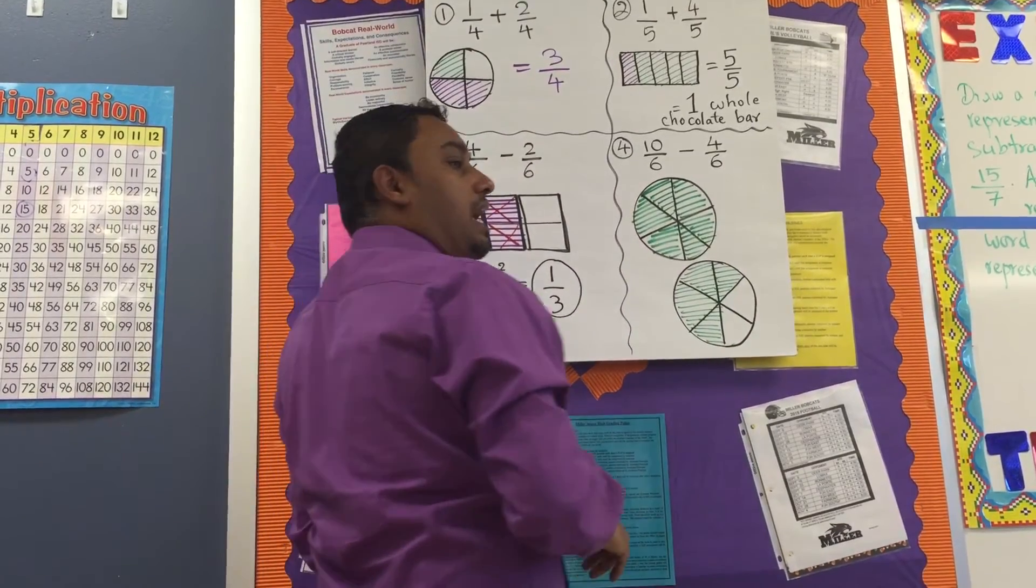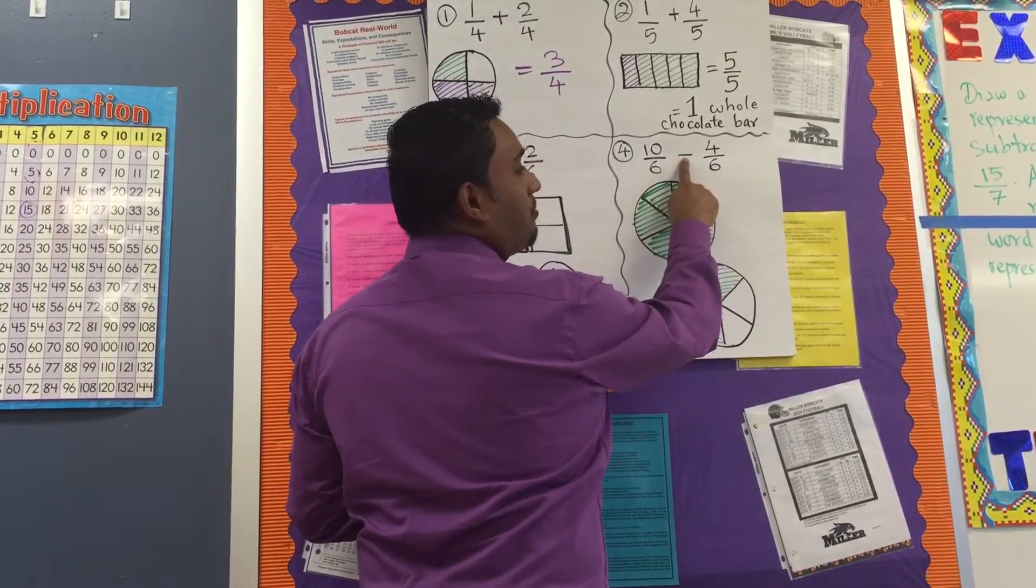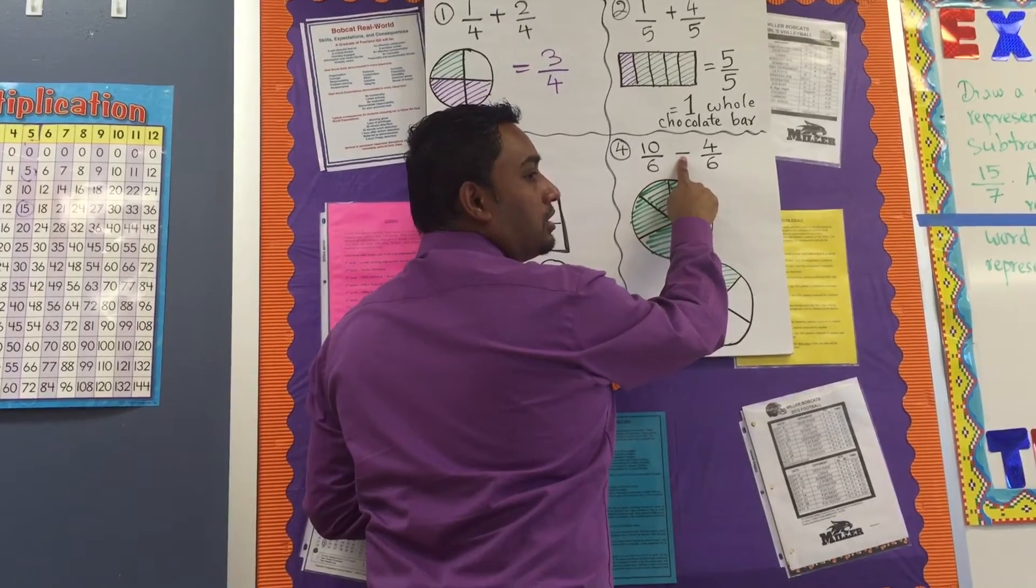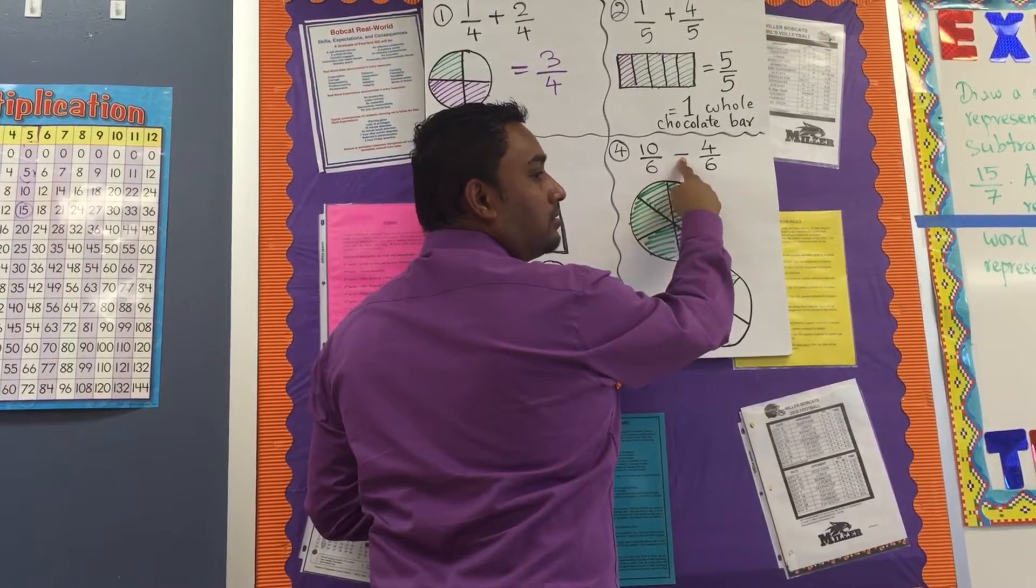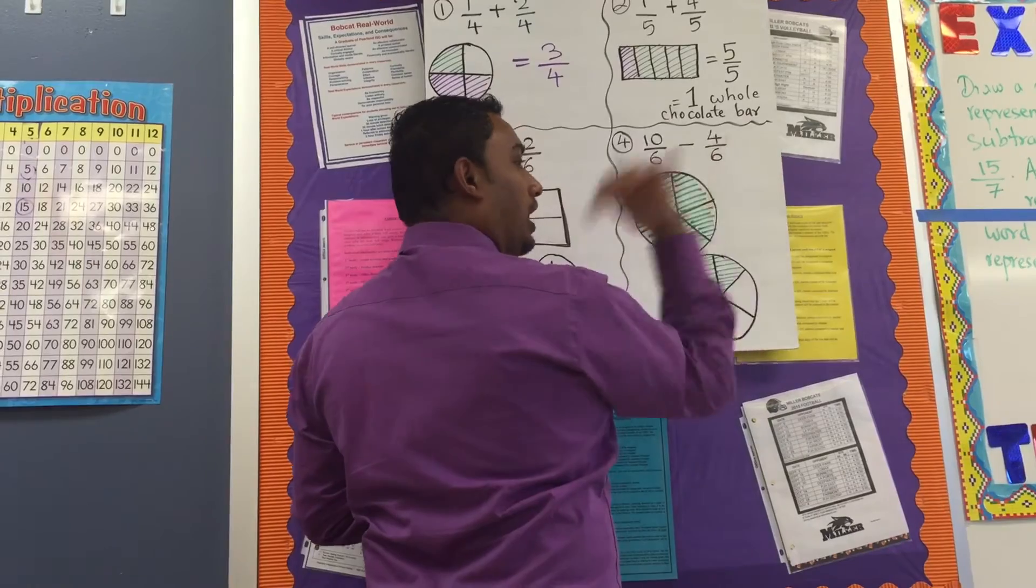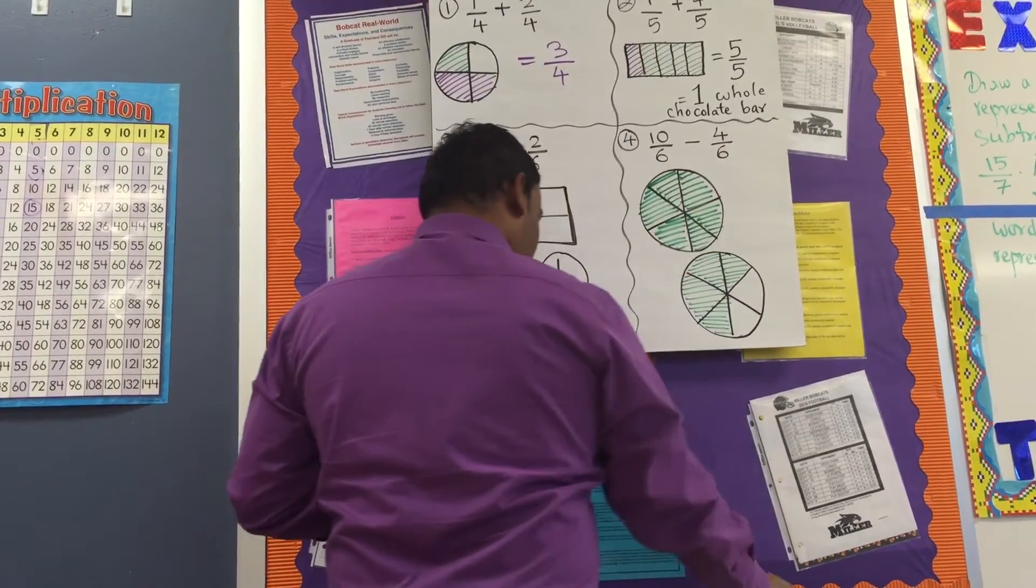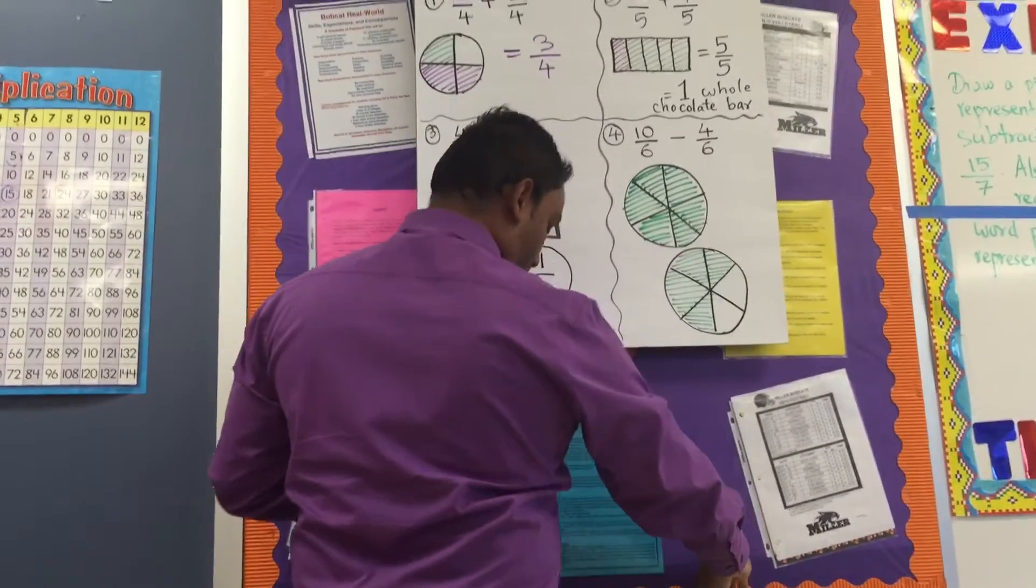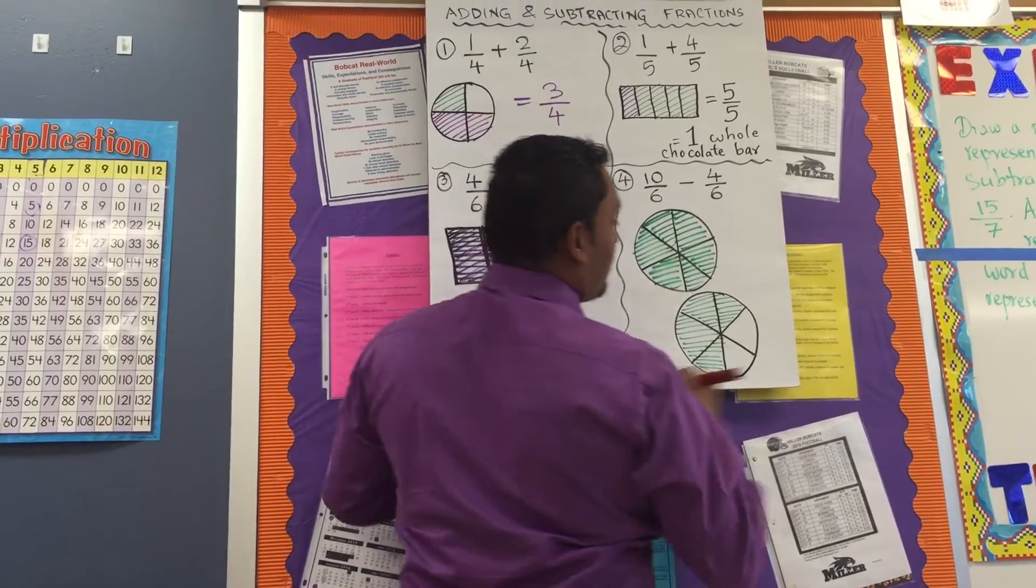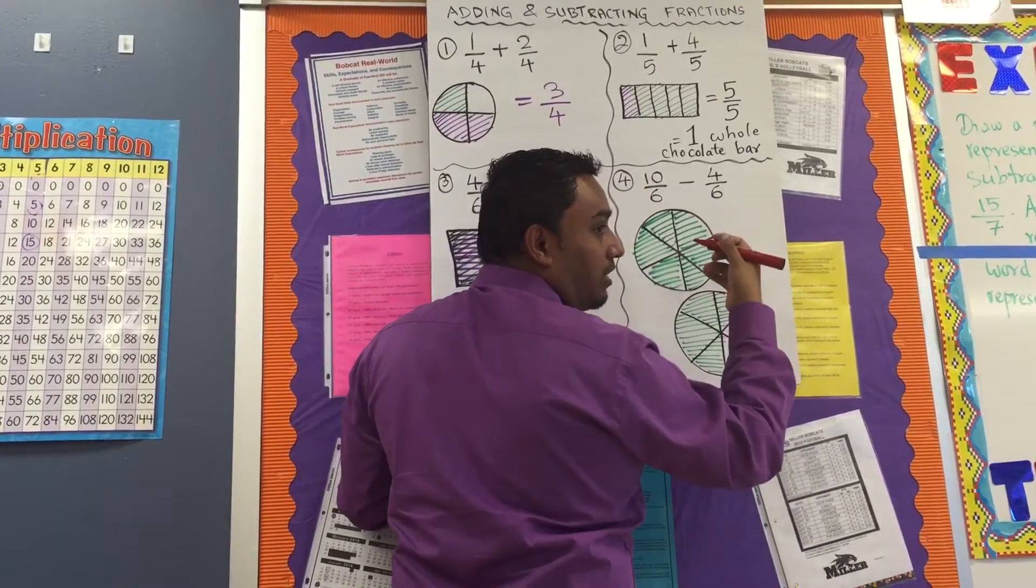Okay. Once again, Brittany, what does subtraction mean? Subtraction means you take away. Okay. So, we take away. We have to cross them out. We are taking away, which means you are giving somebody, right?